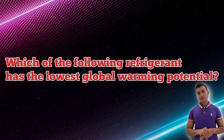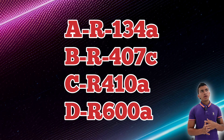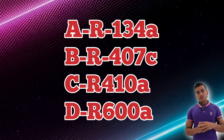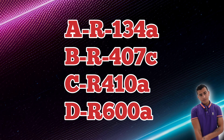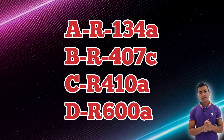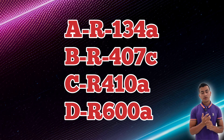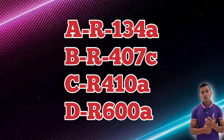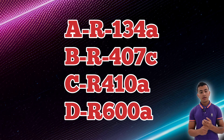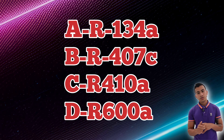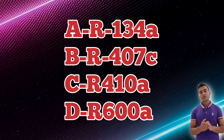Which of the following refrigerants has the lowest global warming potential? To have a high global warming potential, a refrigerant has to contain chlorine. R134A has chlorine, R407C has chlorine, and R410A has chlorine. The only refrigerant that does not contain chlorine is an HFO — R600A — and that will be the answer.